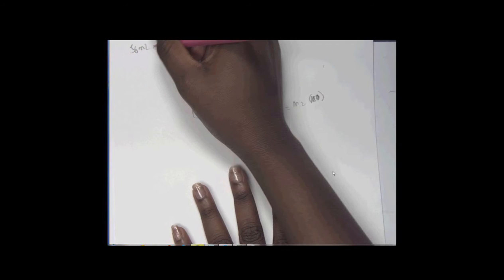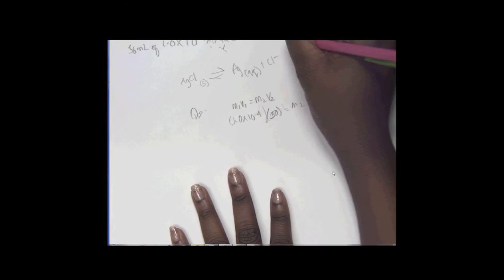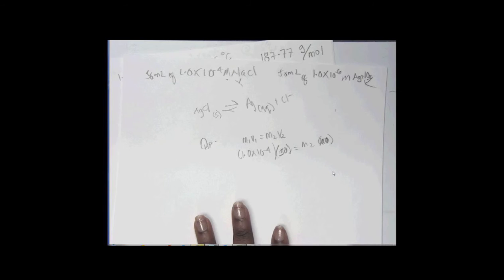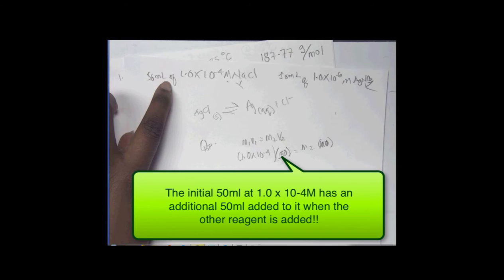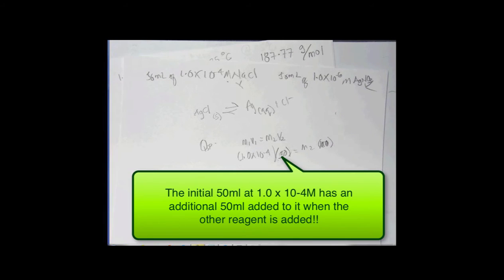You understand? Because you started out with 50, and that's when you know the concentration is when it's 50. I need to add my 50 and my 0, to get the final volume. Does that make sense? Yes, sir.